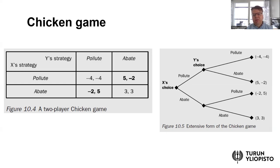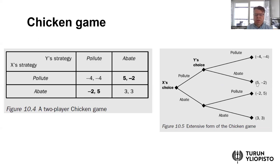In that sense, this might describe the climate policy situation where, for example, the European Union is unilaterally abating even though many other countries around the world are continuing to pollute. This might help illustrate why this kind of situation can still be a Nash equilibrium — there is no incentive for either country to deviate. If X is polluting and Y is abating, the free rider has an advantage, but country Y also has no incentive to deviate in this situation.